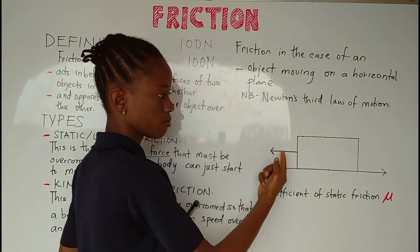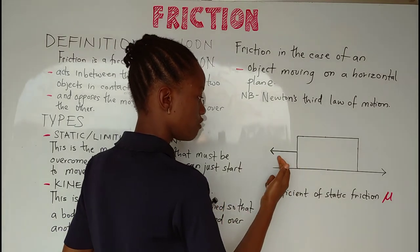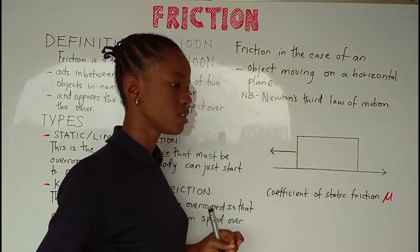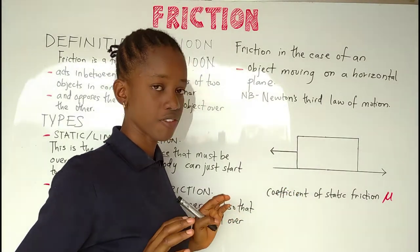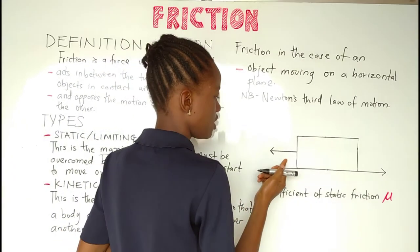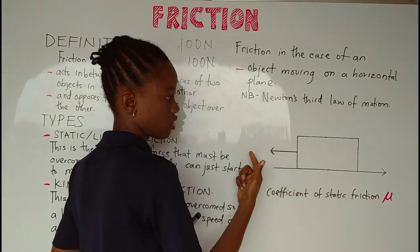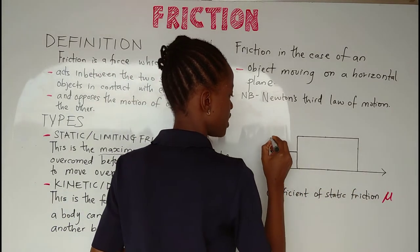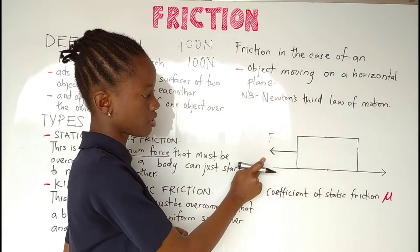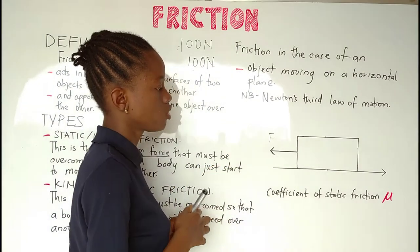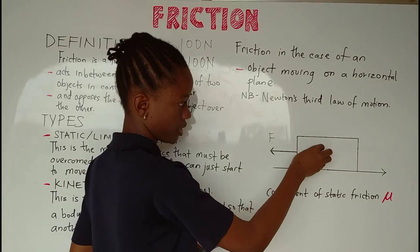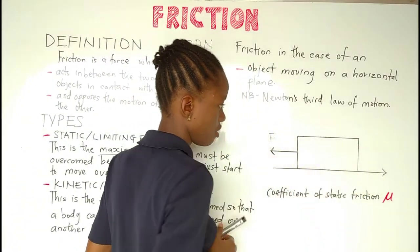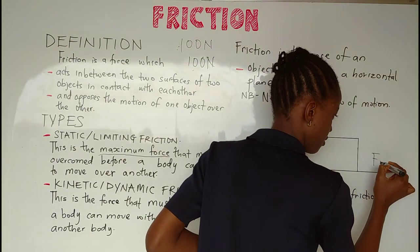The direction of motion of this object means that force is being applied in that direction — just as when you wanted to move the bag of rice over the table, you applied force in the direction you wanted to move it. Since friction opposes motion, friction is going to be in the opposite direction of the motion of this object. So we have friction acting opposite to the direction of applied force.